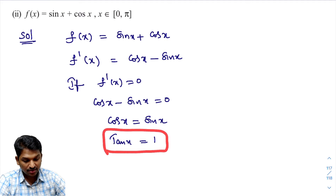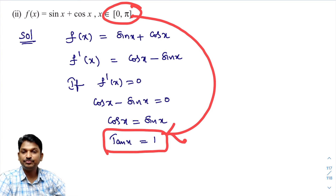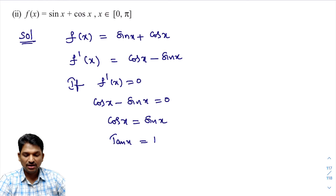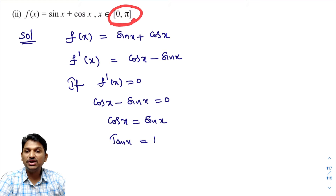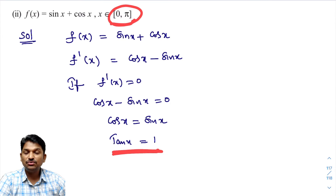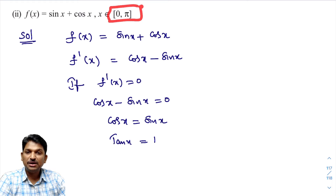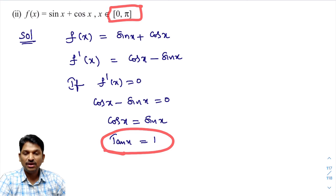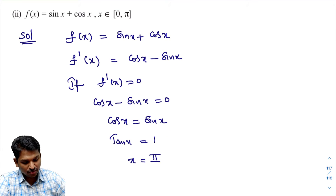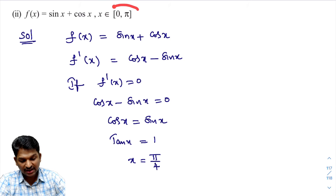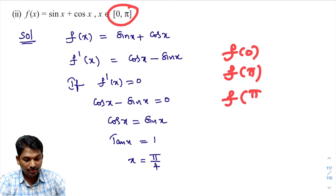We need x values in [0, π] satisfying tan x = 1. Since tan x is positive in the first quadrant and negative in the second quadrant, the only valid solution is x = π/4. We got one critical point x = π/4. Now calculate f(0), f(π), and f(π/4).